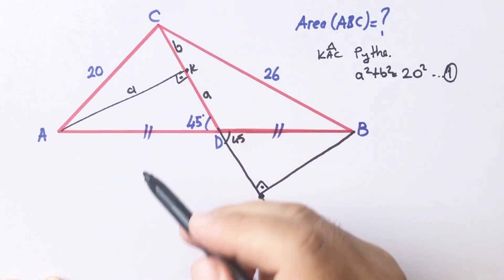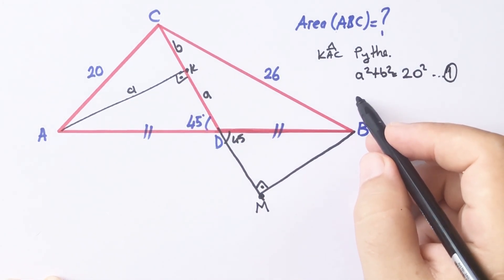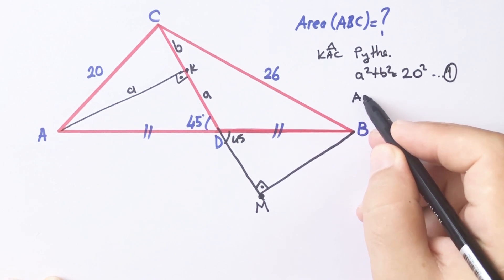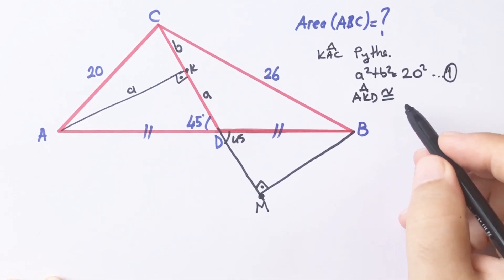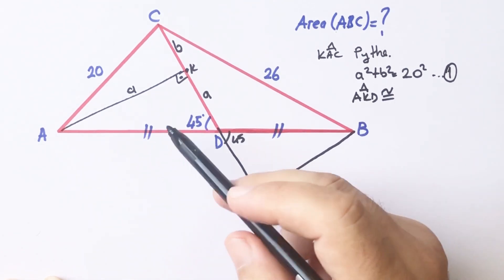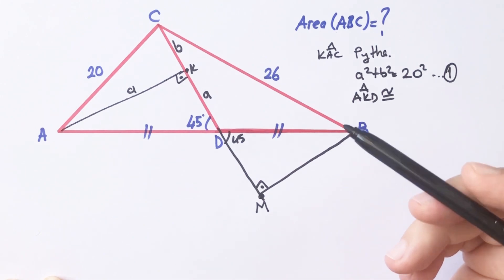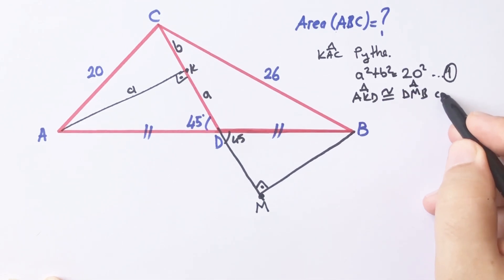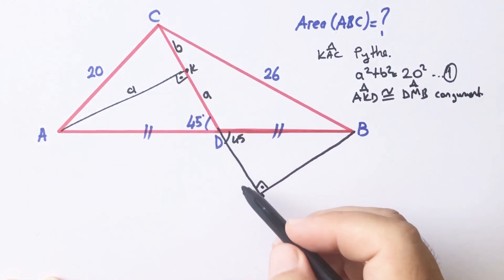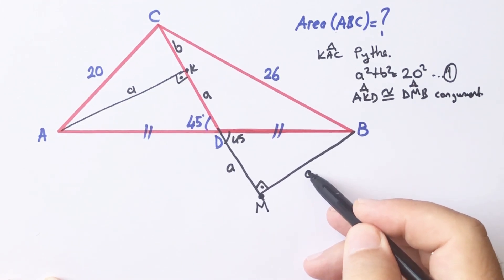Because opposite sides of the 90 degrees are equal, that means these two triangles must be congruent triangles, DMB. Therefore, if here is a, this length must be a unit, and here is also a unit.